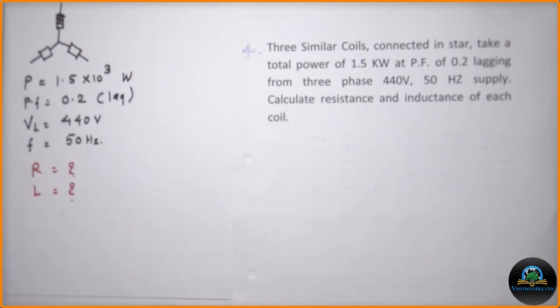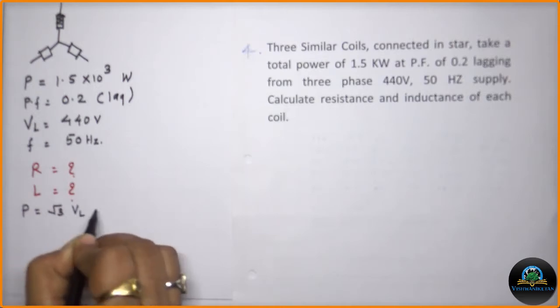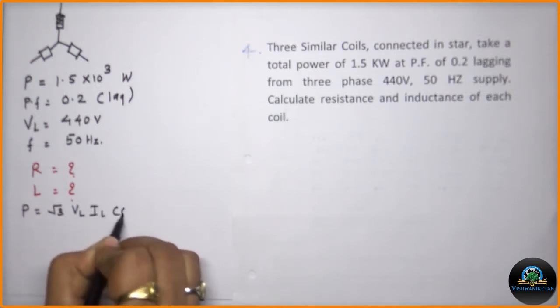As it is a star connection, first of all we will write the equation for the given power. So power is equal to root 3 times VL times IL times cos theta.